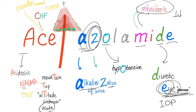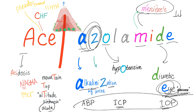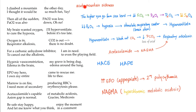So, acetazolamide can decrease the ABP, the ICP, and the IOP. If you know these three, by definition, you are not an SOB. Acetazolamide decreases your systemic arterial blood pressure, lowers your intracranial pressure, and decreases your intraocular pressure. I'm a poor Egyptian guy living in the United States, writing poetry about carbonic anhydrase inhibitors. Life is weird.